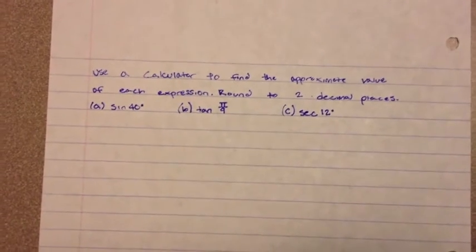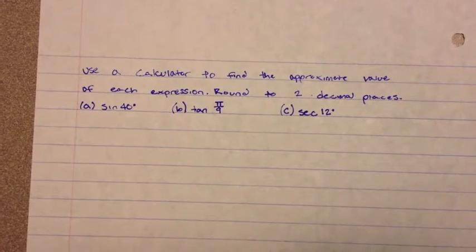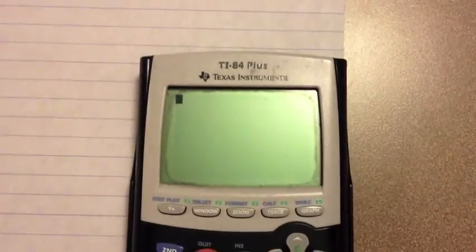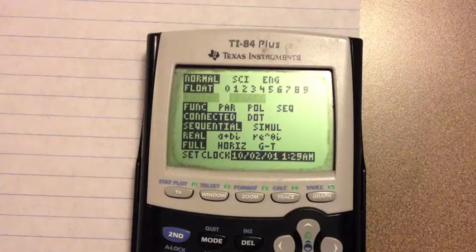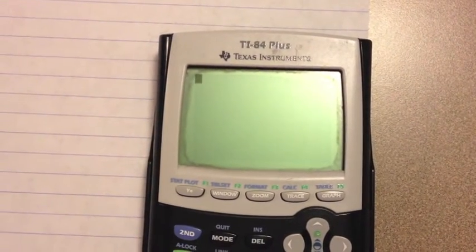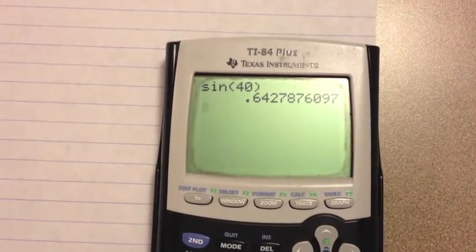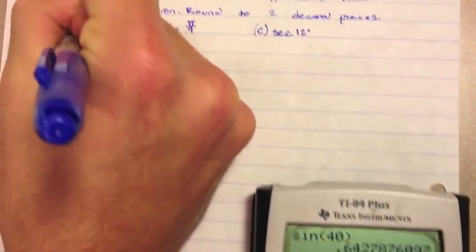Use a calculator to find the approximate value of each expression, round to two decimal places. So for the first one, sine 40, you want to make sure that the mode on your calculator is in degrees. And then just type it in, sine 40 equals that, and then two decimal places equals 0.64.